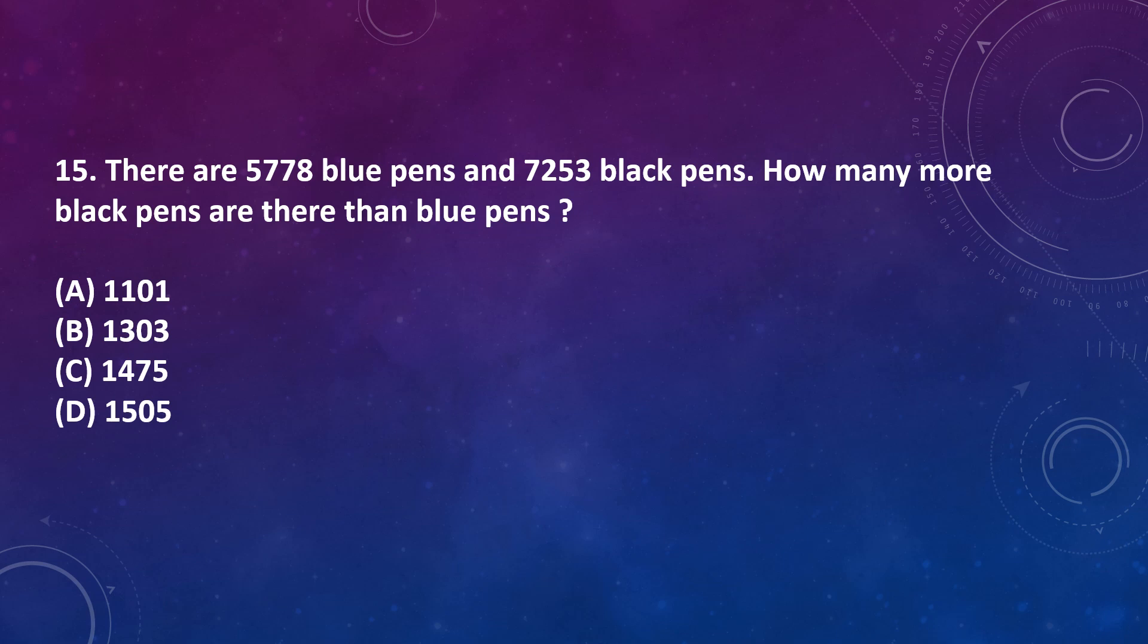Question number 15: There are 5,778 blue pens and 7,253 black pens. How many more black pens are there than blue pens? Option A: 1101, Option B: 1303, Option C: 1475, Option D: 1505. It is given that 7,253 black pens and 5,778 blue pens. So the difference between black pens and blue pens is 7,253 minus 5,778, that is 1,475. Correct answer is option C, 1,475.